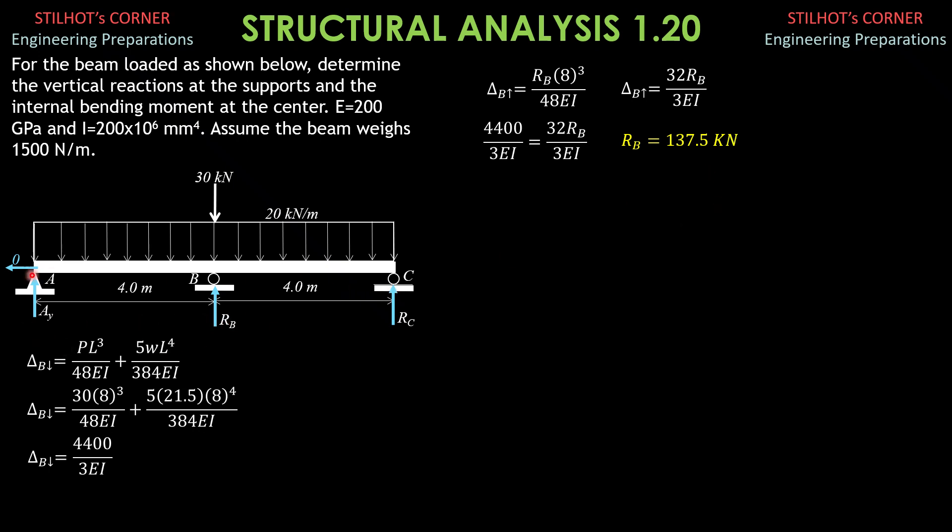Having found R sub E, we consider the entire system. We sum up moment about C equals 0. AY times 8 plus R B, 137.5 times 4 equals 30 times 4 plus 21.5 times 8 times 4. AY equals R sub C equals 32.25 kilonewtons.